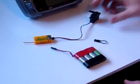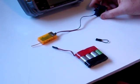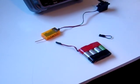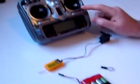This is a walkthrough of the binding procedure for the Spectrum radio system. I'm using a DX7 transmitter.